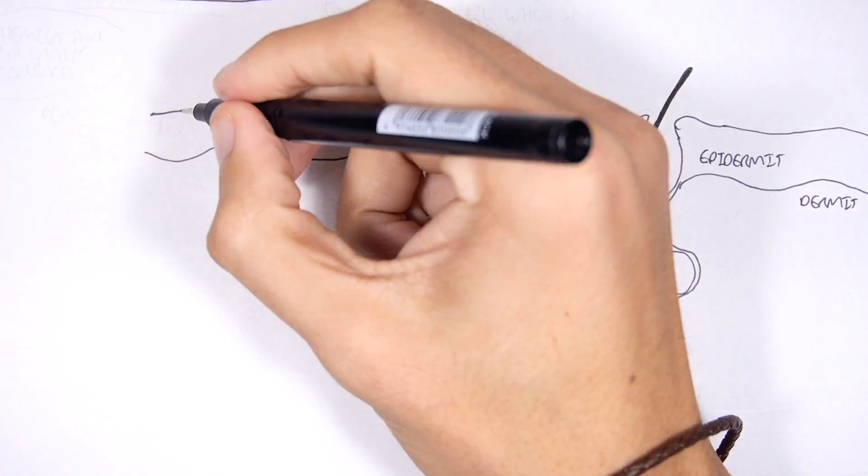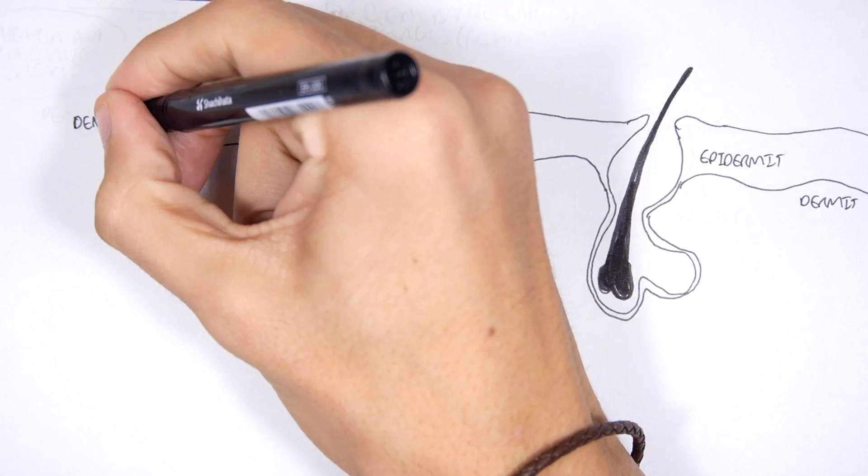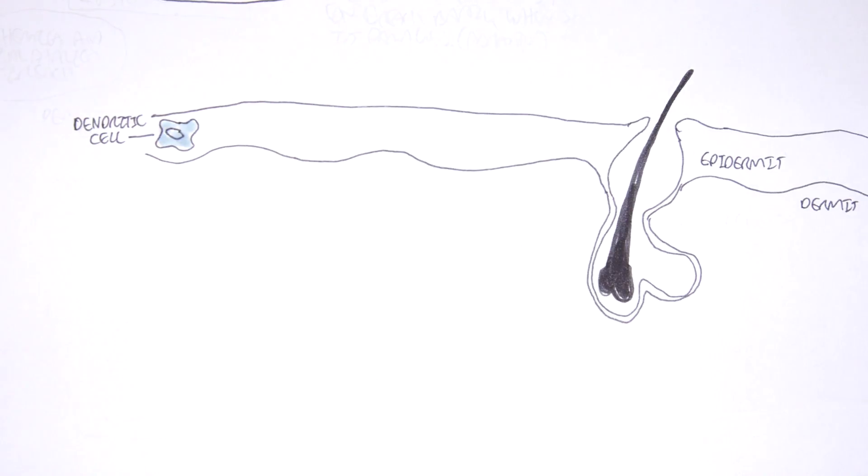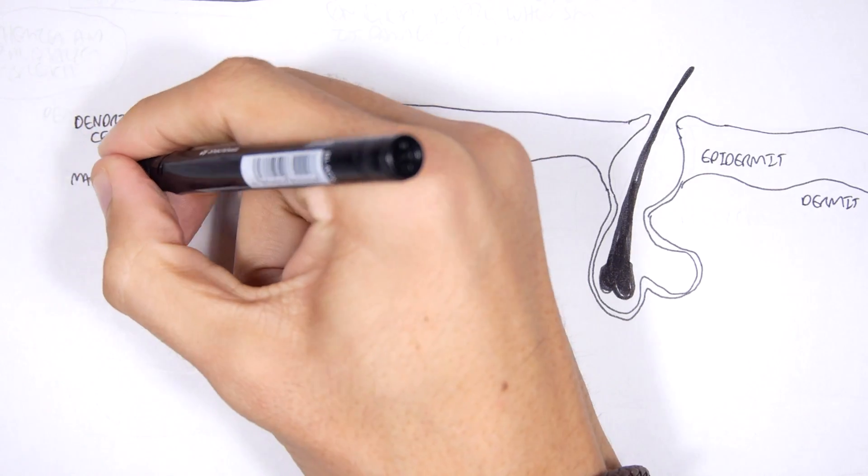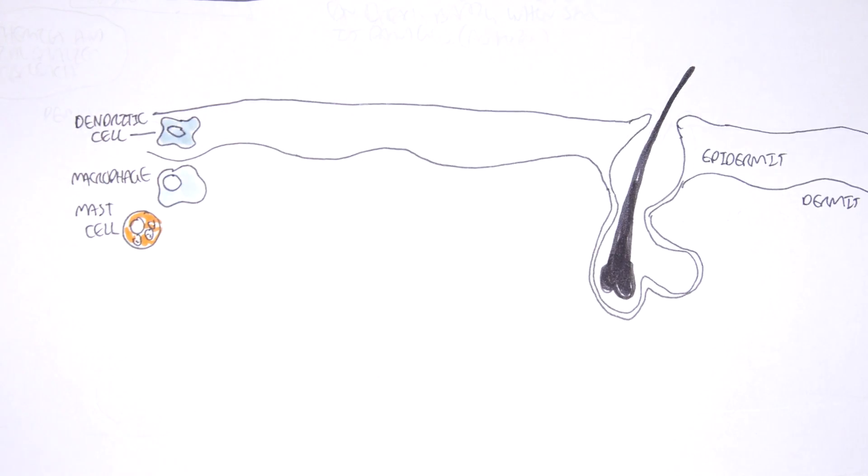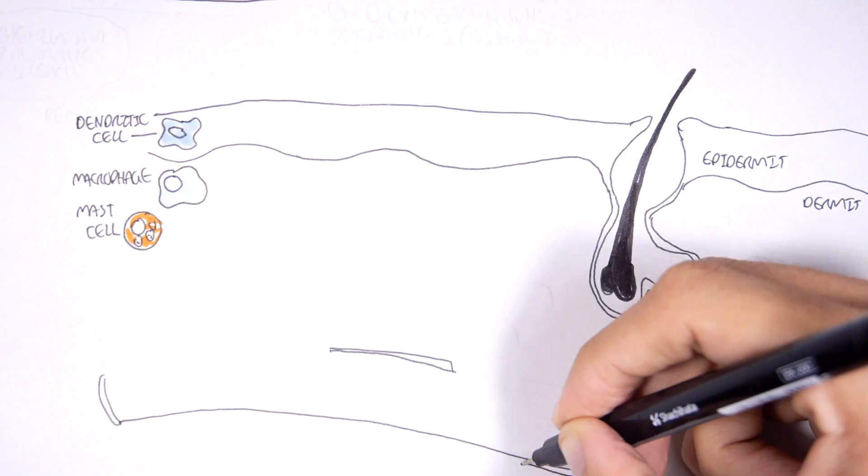Now within the layers of the skin we can find some cells, some immune cells that help protect our body from foreign substances and bacteria and pathogens. We have dendritic cells on the epidermis, we also have macrophages in the epidermis and in the dermis, as well as mast cells. Mast cells contain histamine.